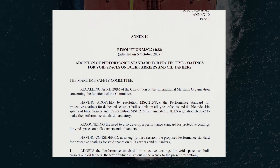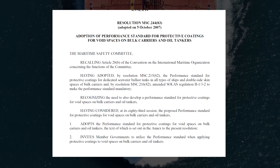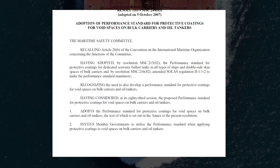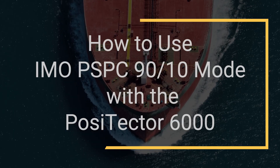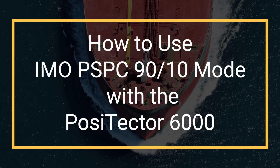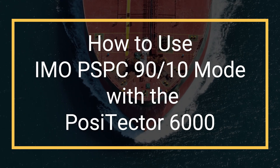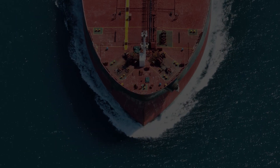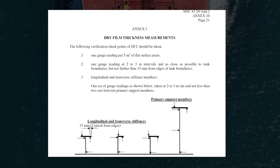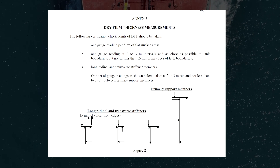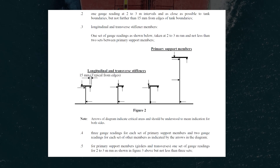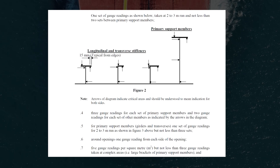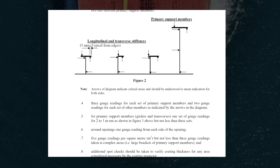Be sure to fully read and understand the IMO PSPC 9010 document prior to inspection. The performance standard for protective coatings 9010 specifies several important locations to be measured and the number of measurements required, including details on flat surface areas, tank boundaries, stiffener members, complex areas such as large brackets, and more. A link to the PDF is available in the description.